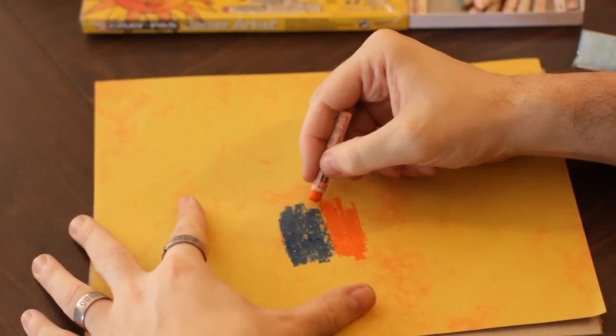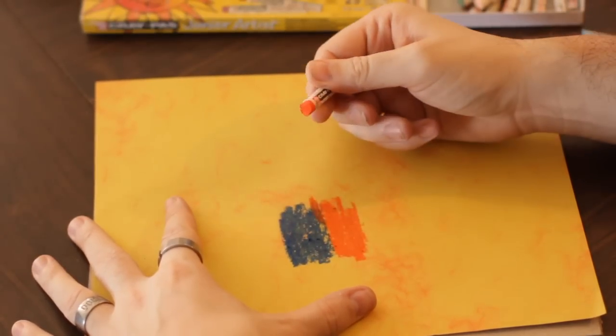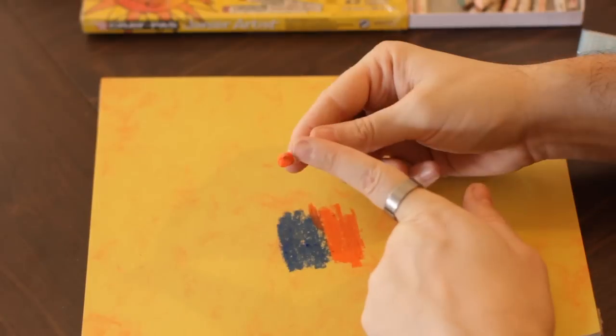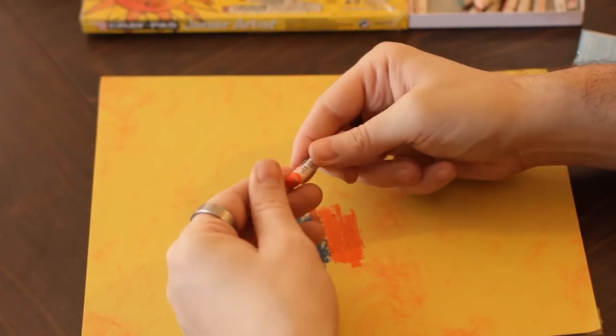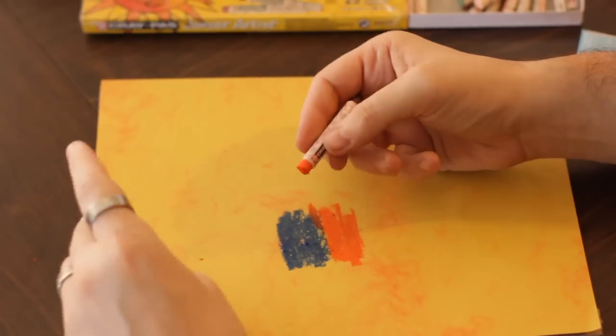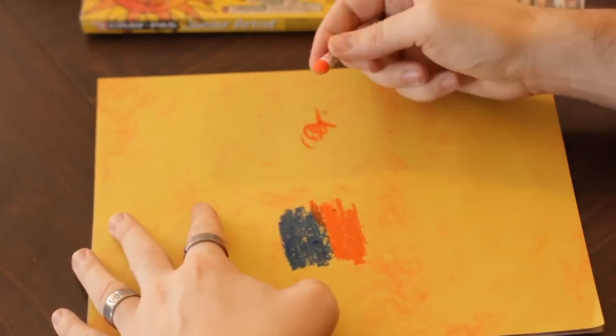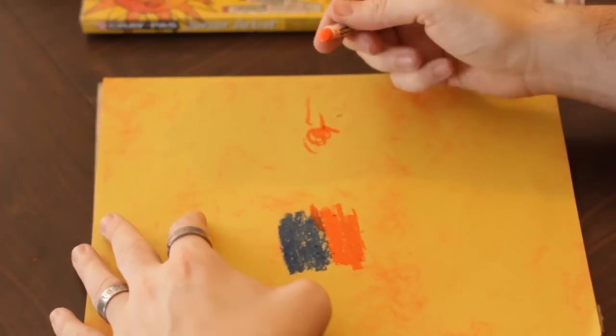Now the problem here is if you start going over top of the blue with the orange, you can blend it that way, but you see how a little bit of blue has come off onto the orange? Well you don't want that because the only way to really get rid of that is to either take it off with your finger or waste your pastel over in the corner and rub that area off.